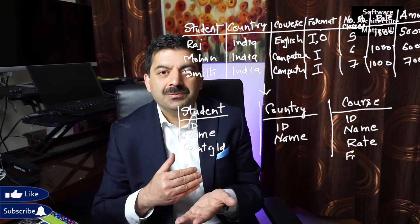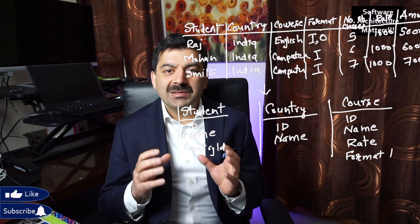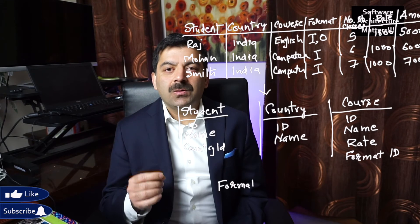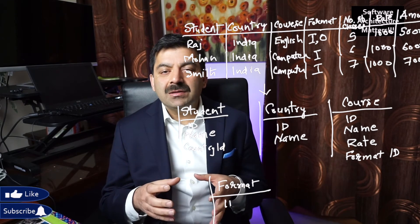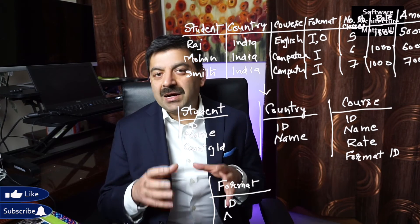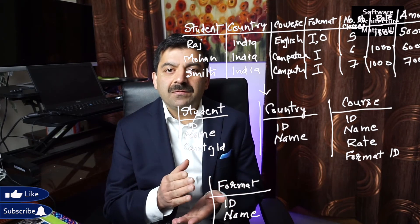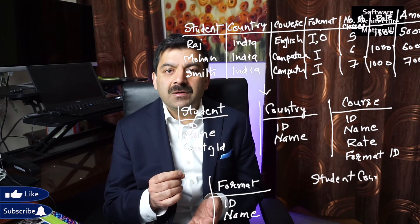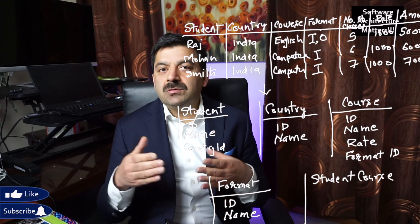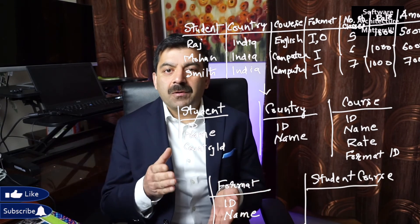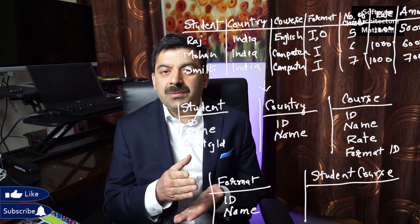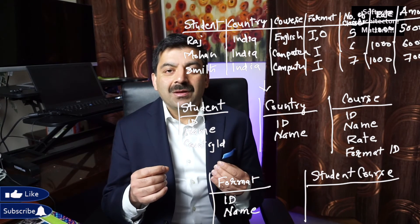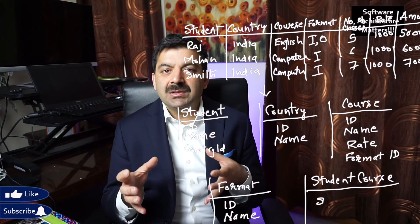A database is in Third Normal Form (3NF) if it is already in 2NF and has no transitive dependencies. Transitive dependency means a column changes because of a change in another non-key column, rather than the primary key. For example, course format (online or instructor-based) depends on the course being offered — if the computer course is always instructor-based, that's a transitive dependency and should be moved to its own table.